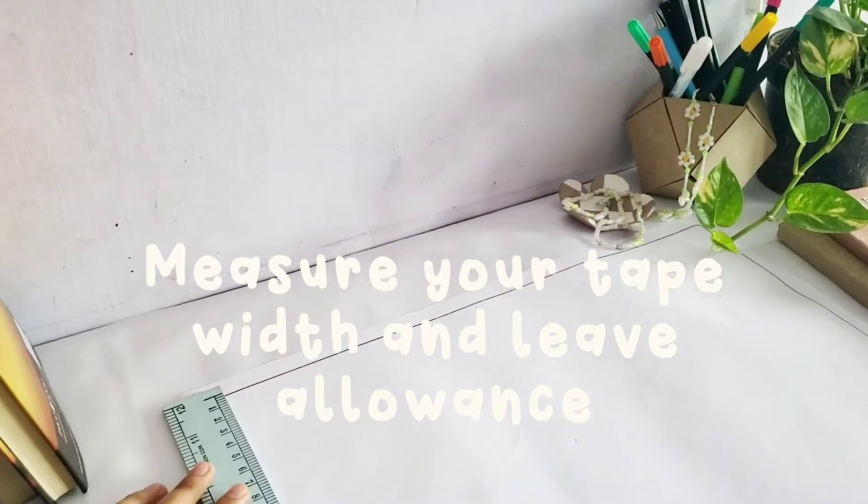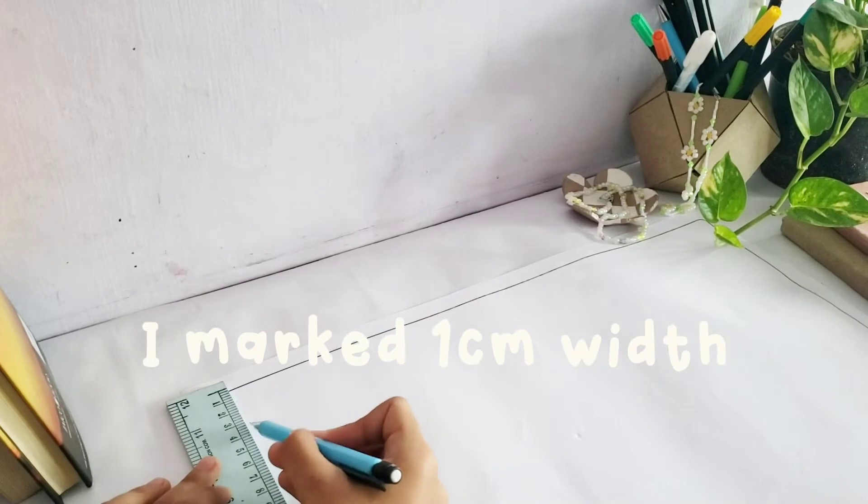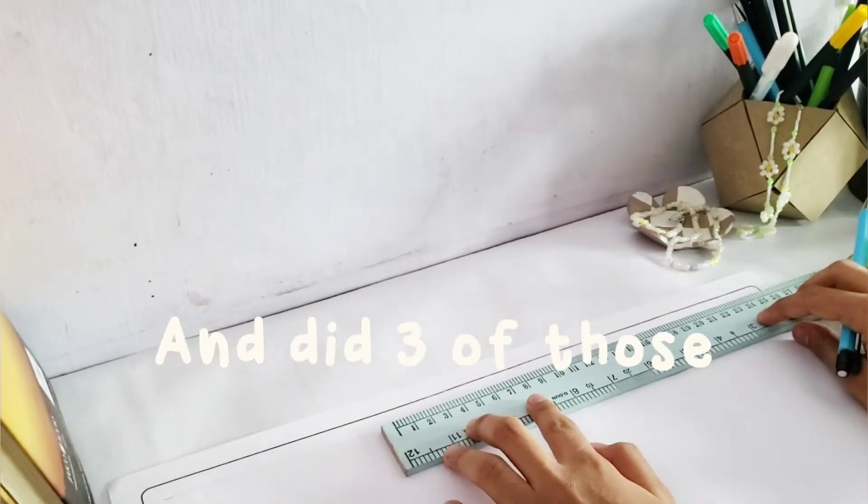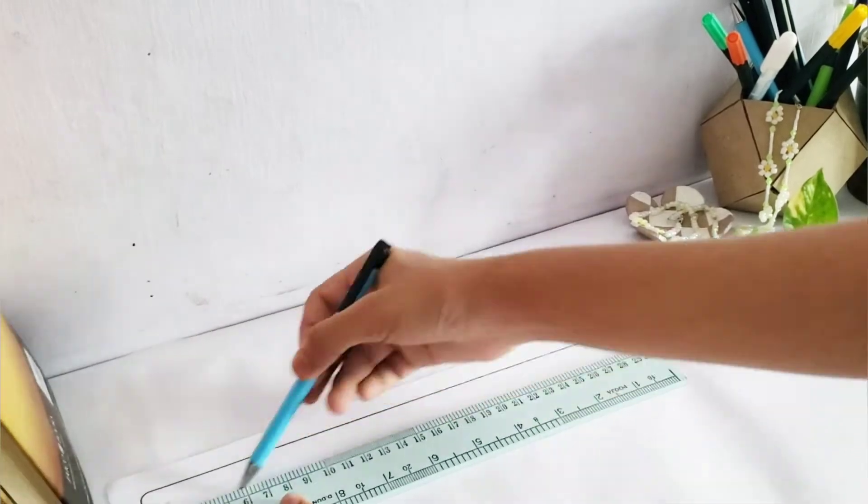Measure the width of your tape and leave a 3 mm allowance on each side so that it can stick to the paper. You can make any length of tape. I made around 3 feet.